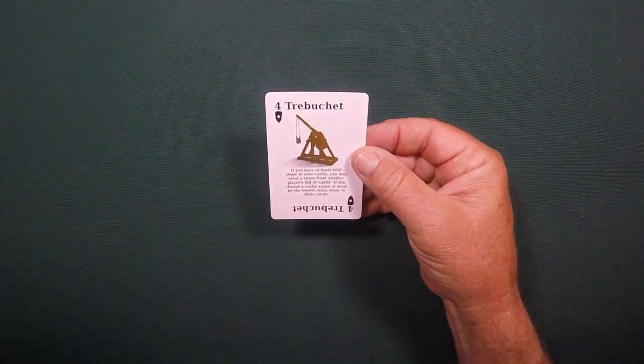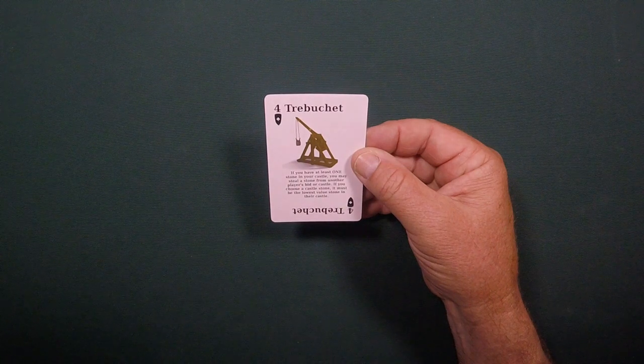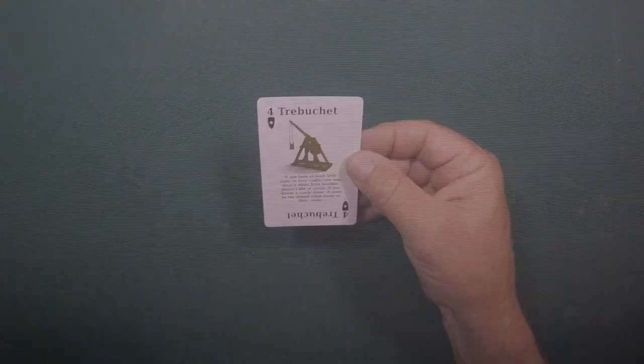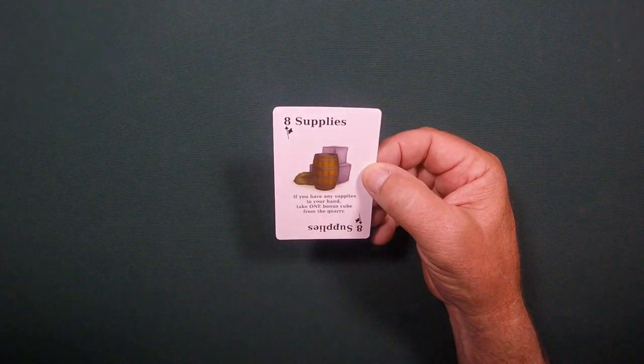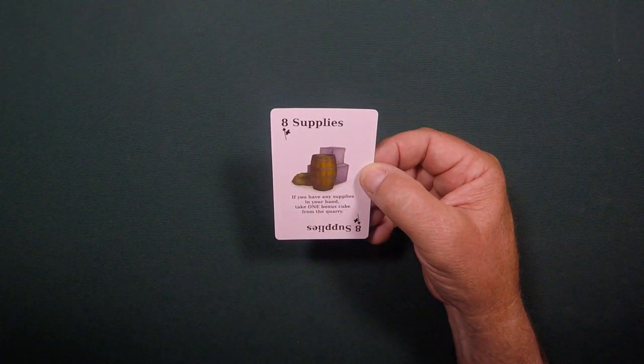The Trebuchet. If a player has the trebuchet, you may steal one stone from another player's castle or bid. Supplies. If a player has supplies in their hand, they take one stone from the bank.